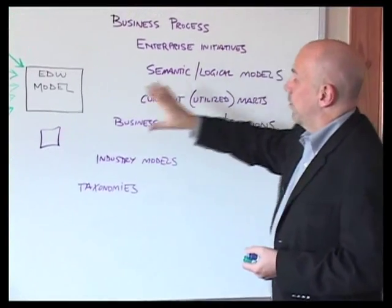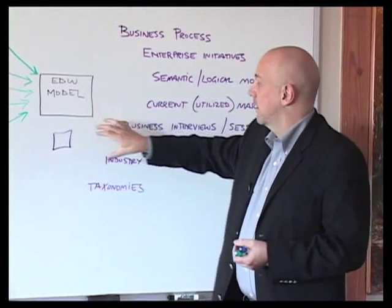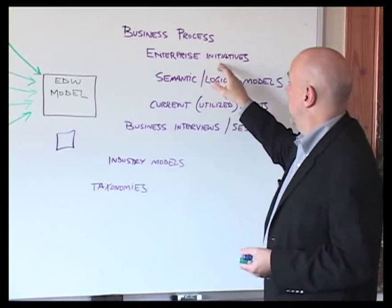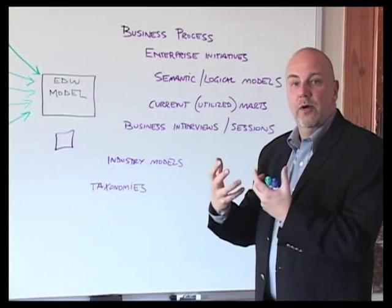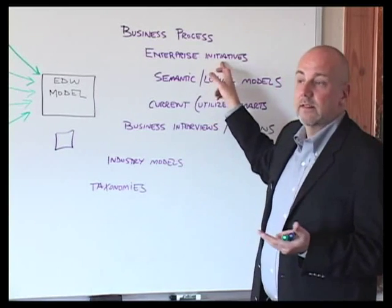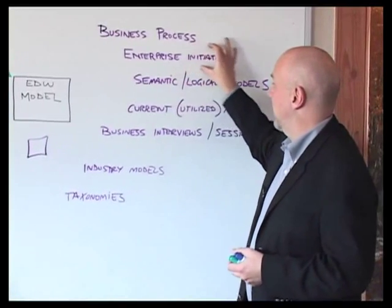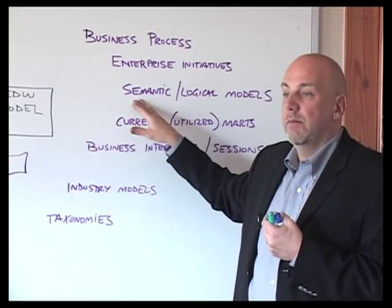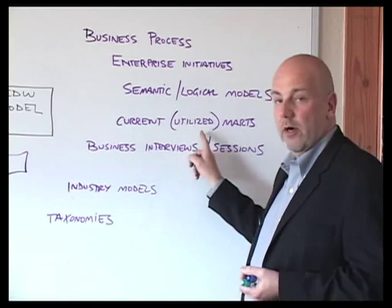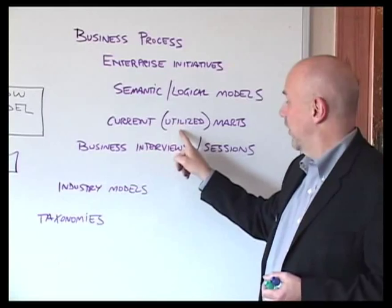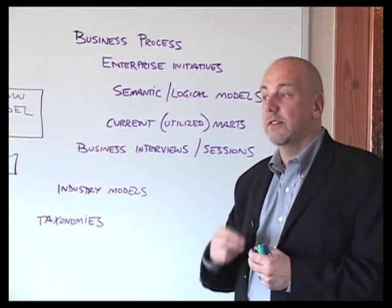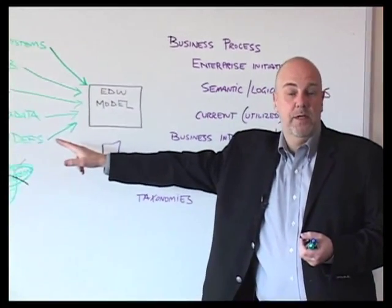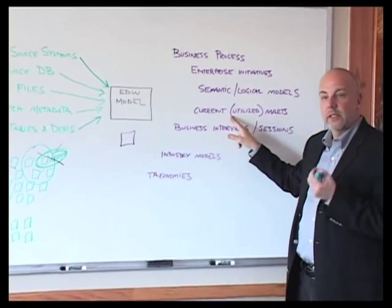So how do I deal with this? I think we start to look at this differently. When I'm modeling my core hubs, relationships, and satellites, I want to look towards the business processes — those permanent long-term business processes for how my business works. I want to look at other enterprise initiatives contemplating enterprise concepts of data, things like MDM, IBM Business Glossary, or similar. I may look to existing semantic or logical models that deal with the broader business context. I may look at current utilized marts — those actually important to the business and used every day — because those give clues as to keys that are really important on a business level, not just the technical level.